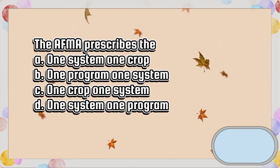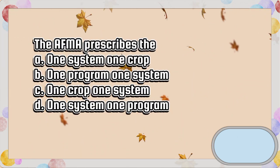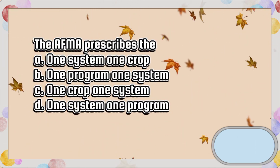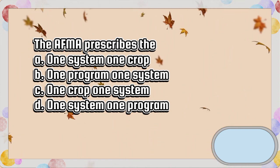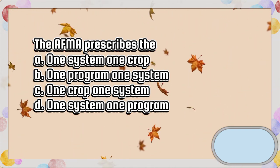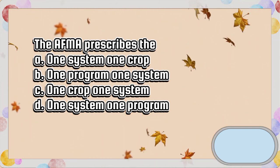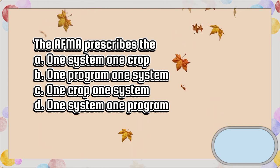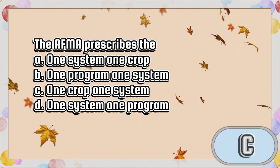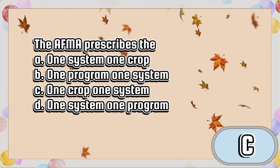The AFMA prescribes the: A. One system one crop. B. One program one system. C. One crop one system. D. One system one program. The answer is letter C.